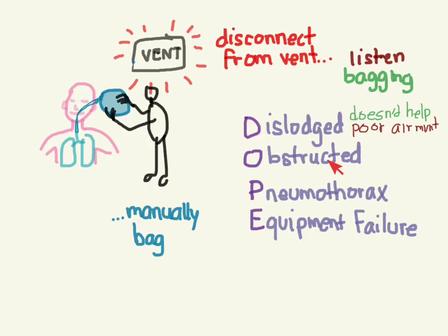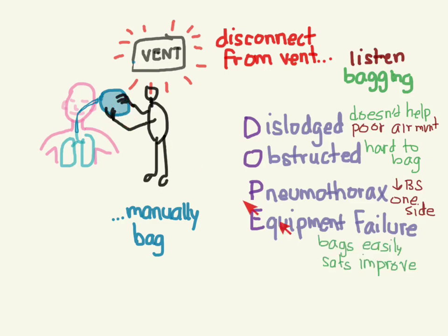If obstructed, you'll find the patient is hard to bag - they may need tracheal suctioning or re-intubation. If they have a pneumothorax, you'll hear decreased breath sounds on one side, asymmetric breath sounds, so they might need a chest tube. For equipment failure, when bagging they bag easily and sats improve, so you just need to get another vent.